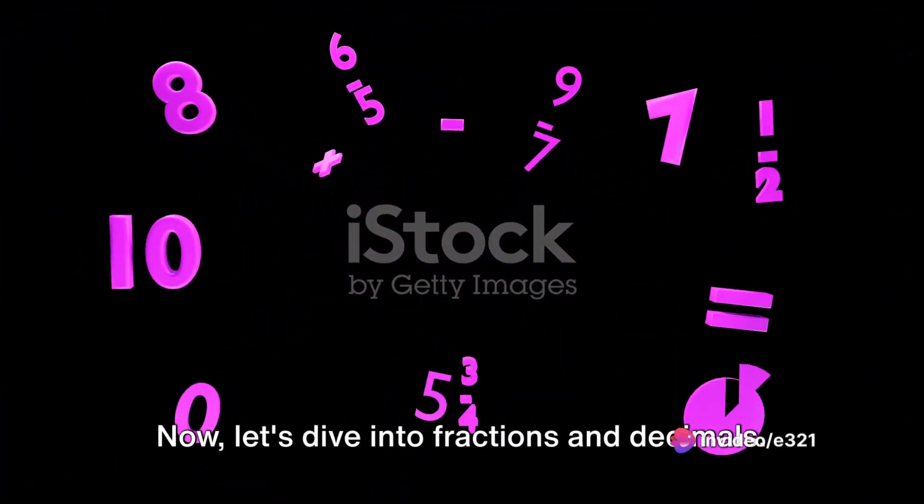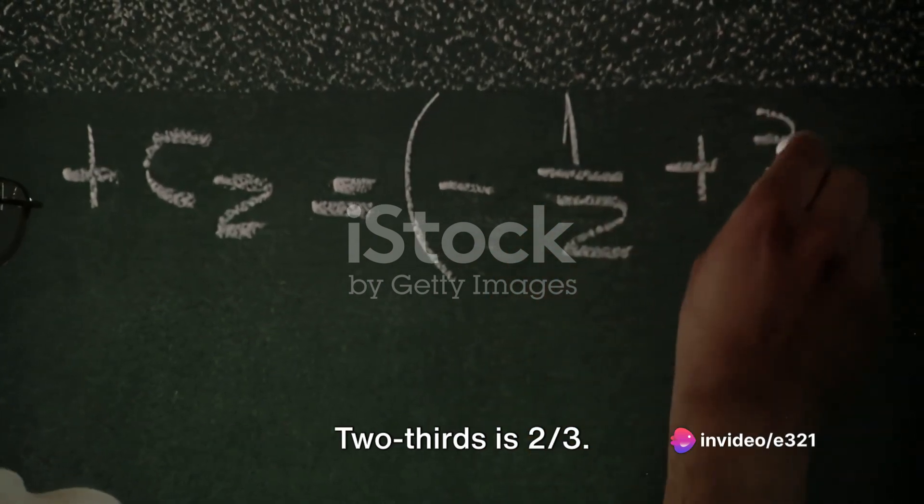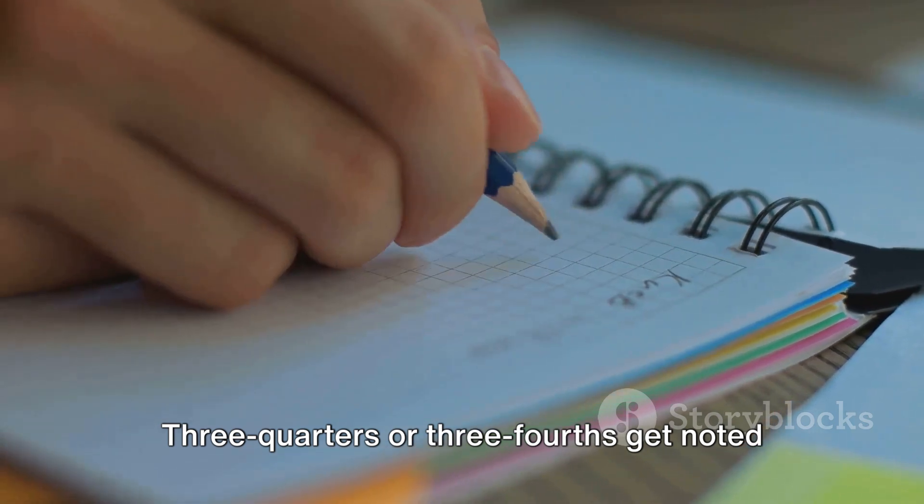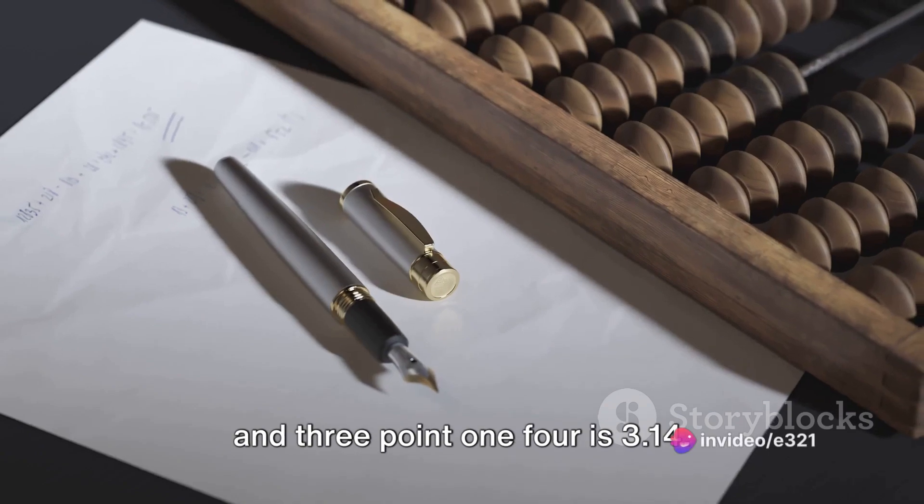Now, let's dive into fractions and decimals. 1 half can be written as 1 half or 1 over 2. 2 thirds is 2 thirds. 3 quarters or 3 fourths get noted as 3 quarters. 5 and an eighth or 5 and 1 eighth is 5 and 1 eighth.